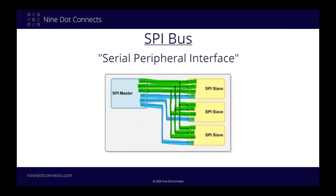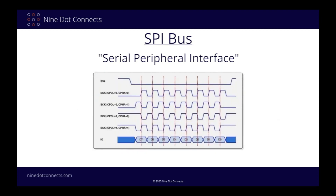If you search for how to route SPI buses, you'll come across a wide range of recommendations, from just do whatever, to treat them like sensitive high-speed signals. But how do you really know what you need to do? Since the SPI bus is a synchronous serial bus, it is the relationship between the clock edge and the data signals that is the most critical parameter for proper operation. The only routing requirement is that the end results give you the proper timing relationship at the desired clock speed. Of course, you might still have to worry about EMI and other possible signal integrity issues, but timing is the most basic requirement.